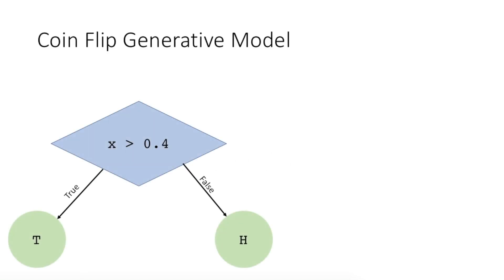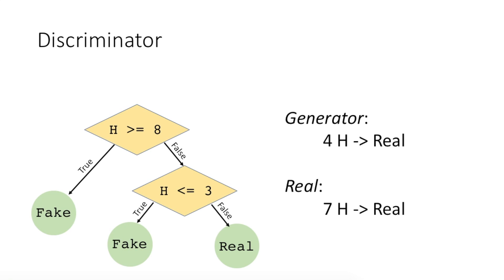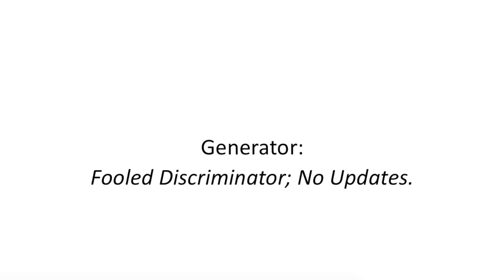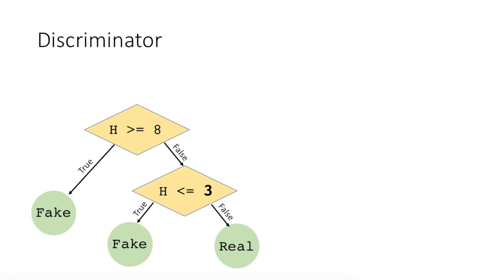Okay, one last trial. With our generator, we create fake data using the new parameters and now have four heads. Our real data with the actual coin is the same — seven heads. We now use our discriminator to assign labels to each of the two datasets. Both the fake and real data get real labels. In other words, the generator was successful in fooling the discriminator this time. Since the generator was successful, it does not need updating. However, the discriminator needs to be updated since it incorrectly thought the fake data was real. It failed because it thought four heads were enough to get the label of real. Let's update this lower bound condition on the discriminator from less than or equal to 3, to less than or equal to 4.